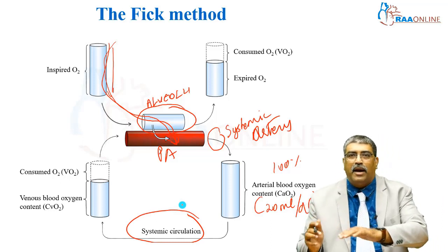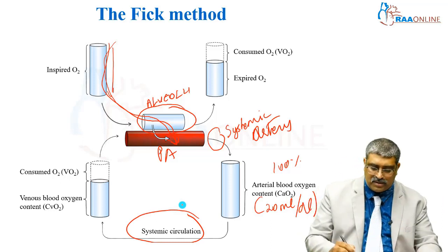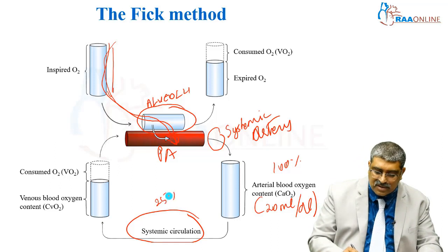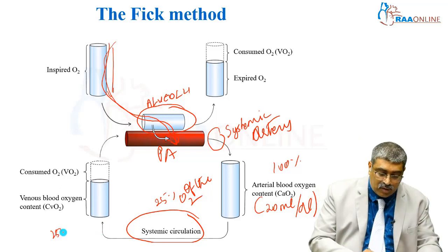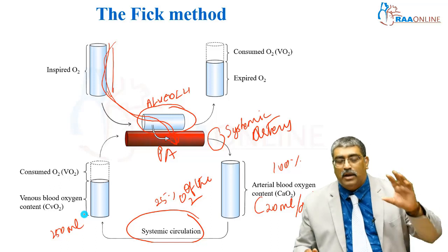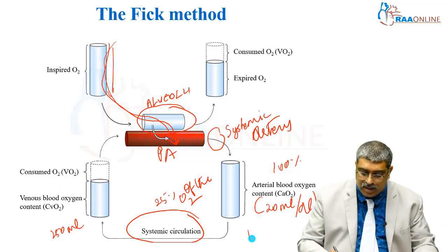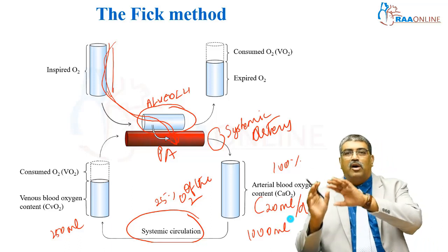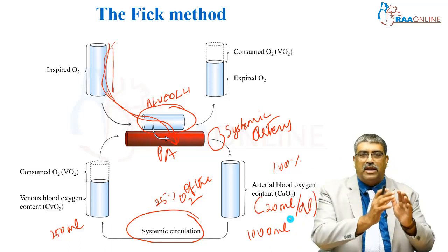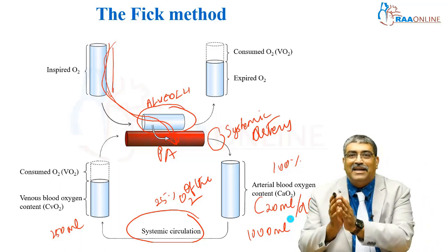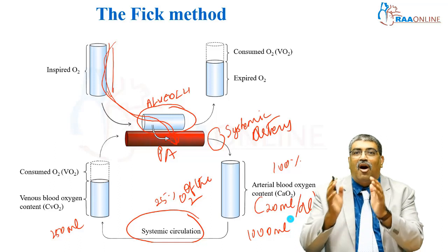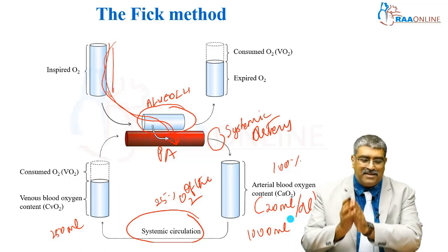As this oxygenated blood goes into the organ system, 25% of the oxygen is extracted. In other words, the oxygen consumption is around 250 ml. Normally around 1000 ml is being delivered to the organ system. Your oxygen delivery is 1000 ml and 250 ml is consumed. Your oxygen content is around 20 ml per deciliter, of which 25% is extracted.